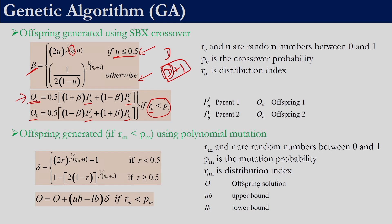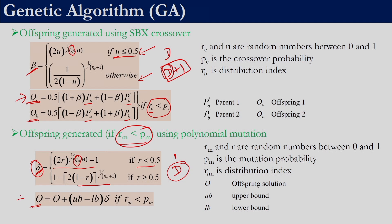Once the beta value is found we can generate the two offspring using those two equations. Similarly for mutation, we first generate one random number between 0 and 1. If that is less than the mutation probability then we undergo mutation, else mutation is not performed. If this condition is satisfied we need to generate an additional d random numbers between 0 and 1. If those random numbers are less than 0.5 we use the first equation to determine delta, else we use the second equation. eta_m is a user-defined parameter similar to SBX crossover. In polynomial mutation we generate d different deltas, and once delta is obtained we calculate the new offspring.